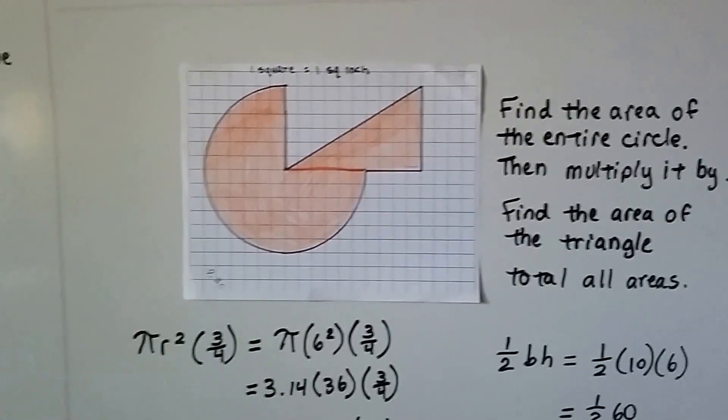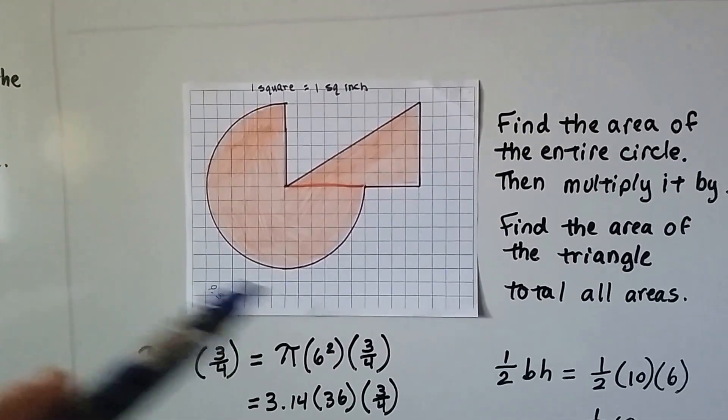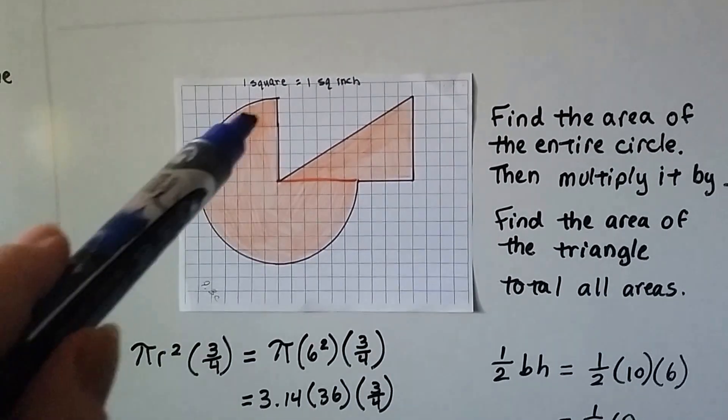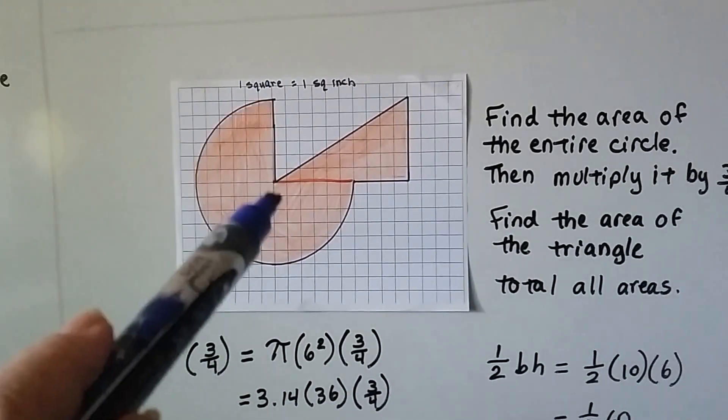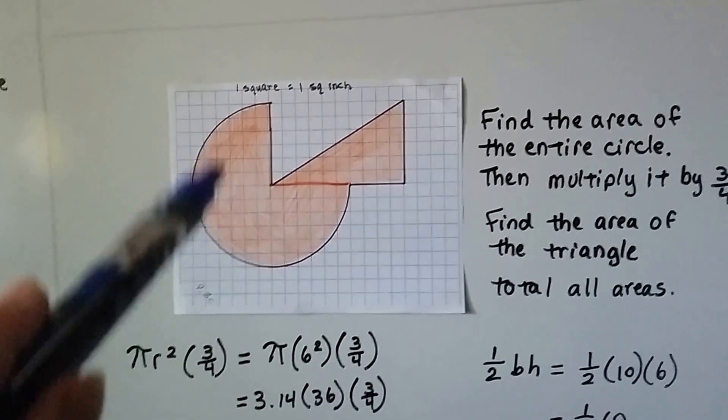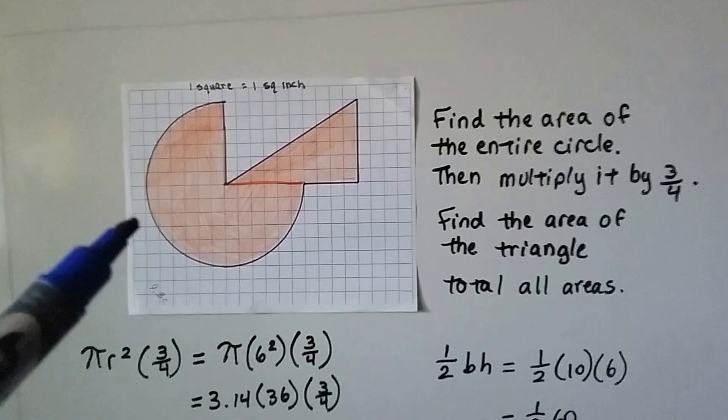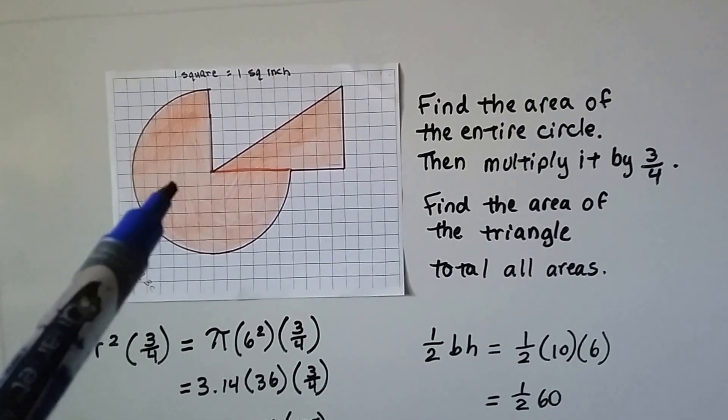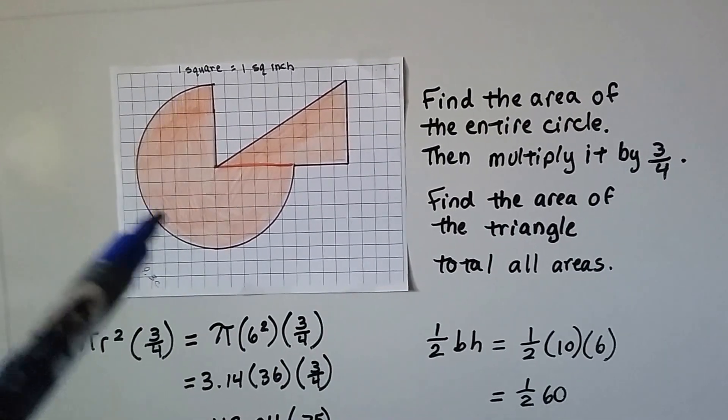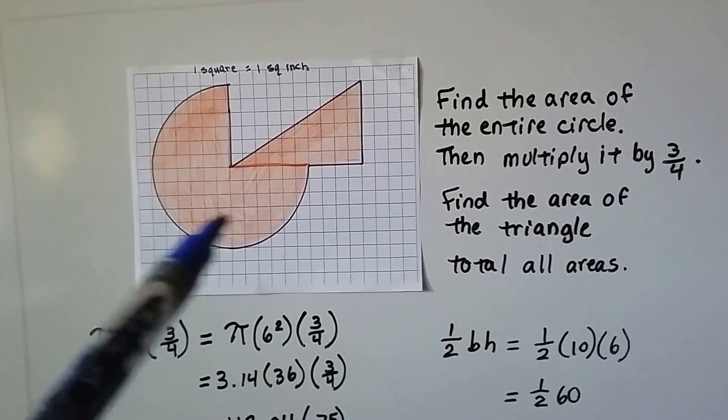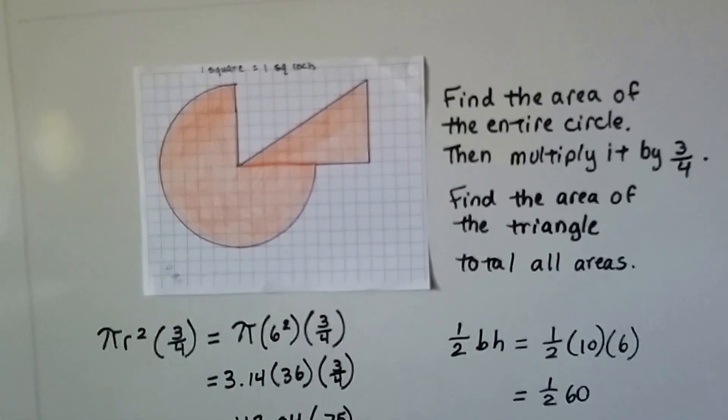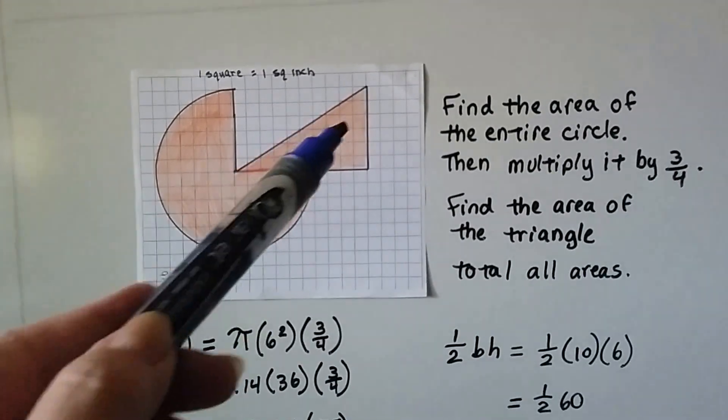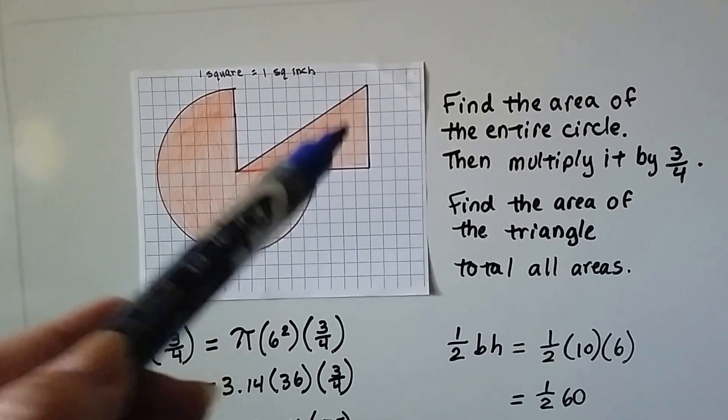If we break this apart into two shapes, we see that we have a circle and a triangle. The circle is missing a fourth, so this is 3/4 of a circle. We're going to find the area of the entire circle and then multiply it by 3/4 to find out what this area is here.